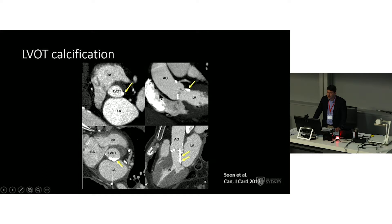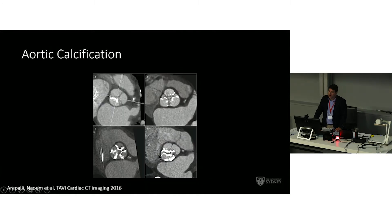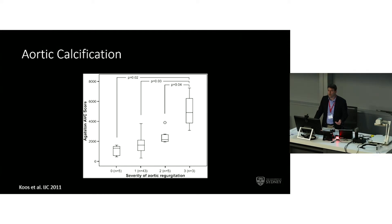There are many other factors to consider when deciding on device size and associated risks. One is LVOT calcification — heavy LVOT calcification is associated with a higher risk of annular rupture. The amount of calcification on the aorta is also important, assessable visually, semi-quantitatively, or via a calcium score algorithm. A calcium score of more than 3,000 is associated with a much higher risk of paravalvular leak, at least with a self-expanding valve, so these considerations are quite important.